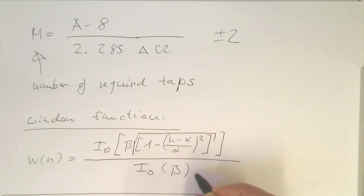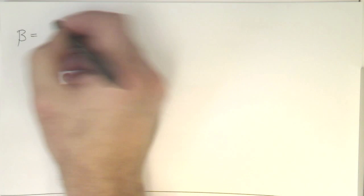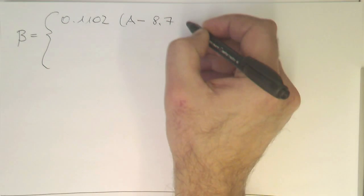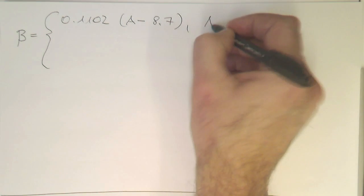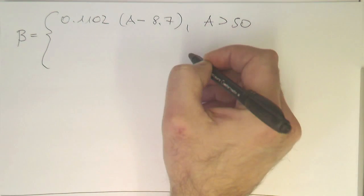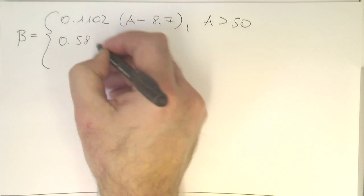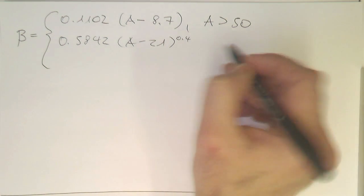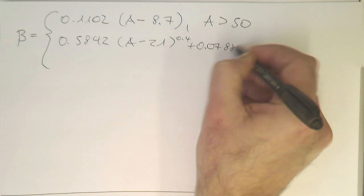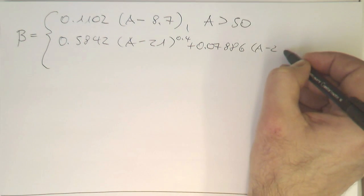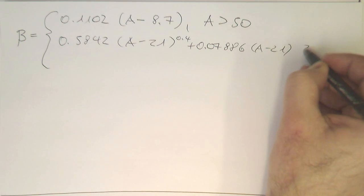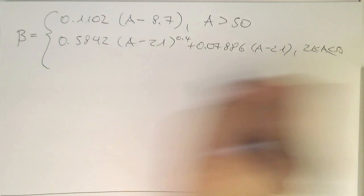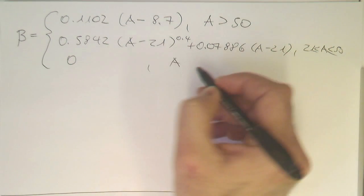This is then divided by beta. Beta is defined as 0.1102(A − 8.7) — used when A is greater than 50. We use 0.5842(A − 21)^0.4 + 0.07886(A − 21) in case A is in the region of 21 to 50. Otherwise beta is 0 for A smaller than 21.